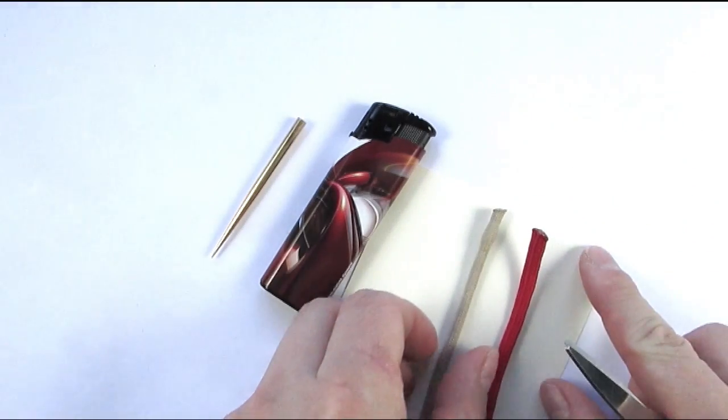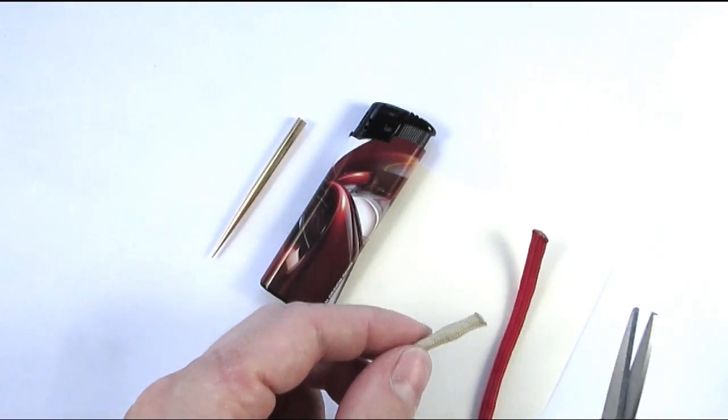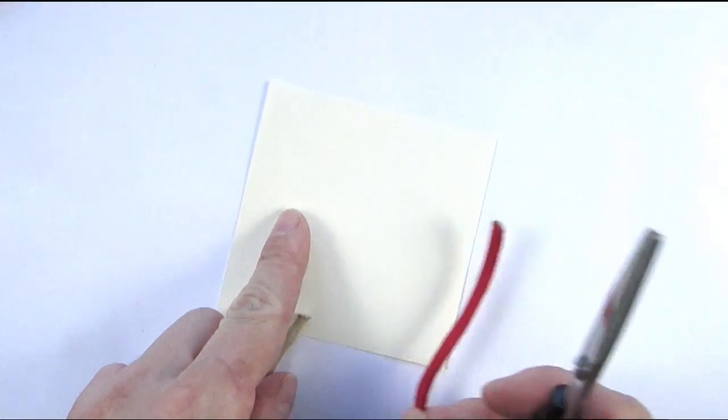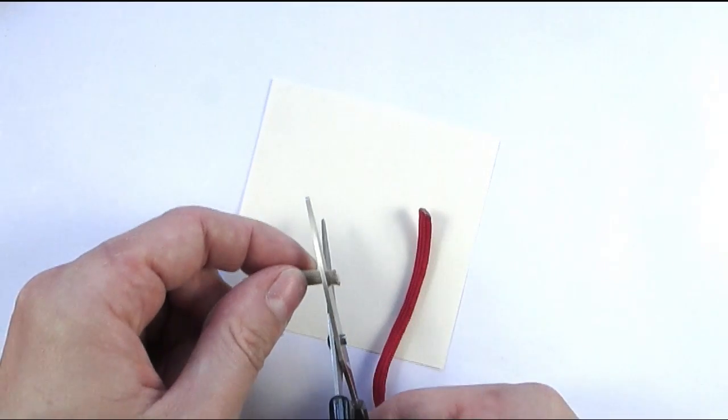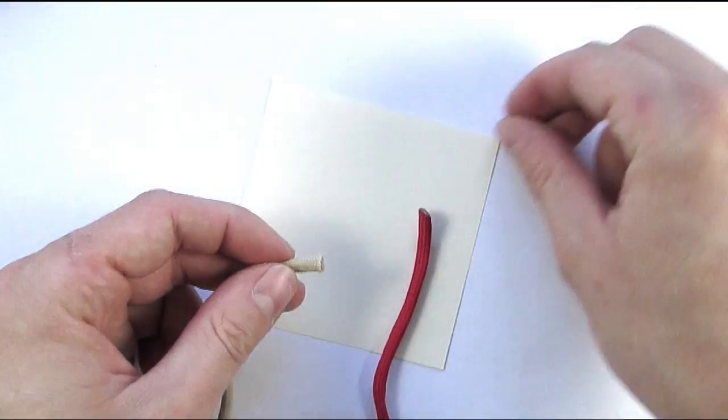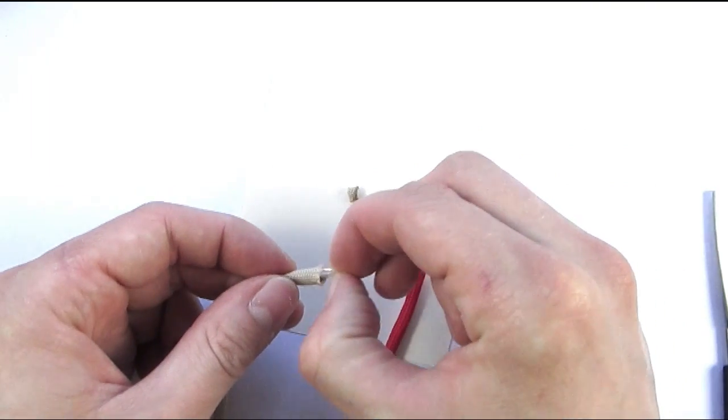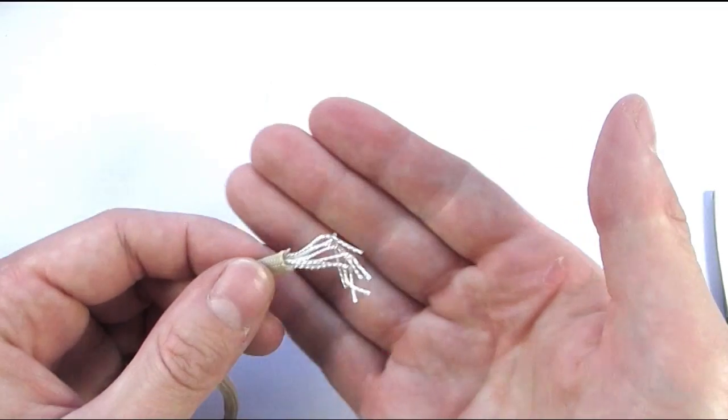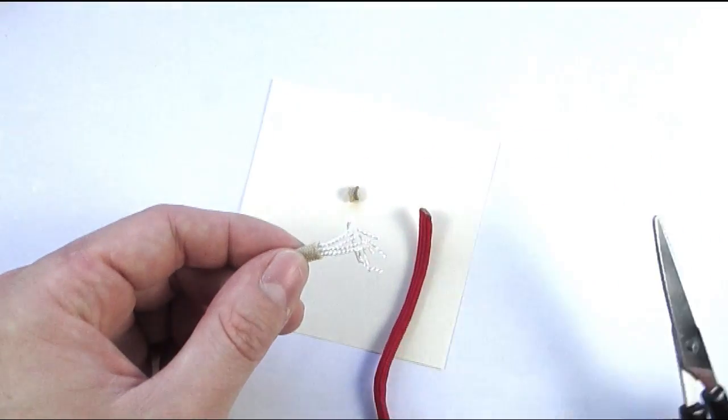Now the first thing I'm going to do is cut the ends of my cords. So just cut your ends, then pull the inner strands out and cut those as well. This will make your job a lot easier.